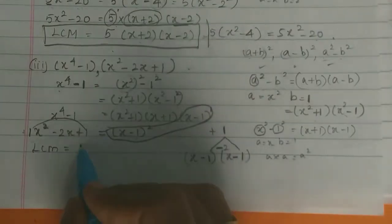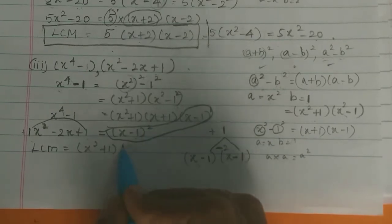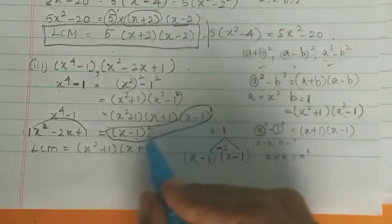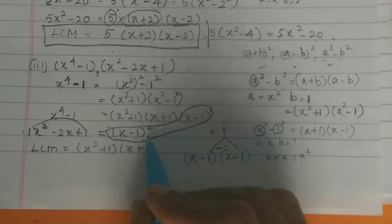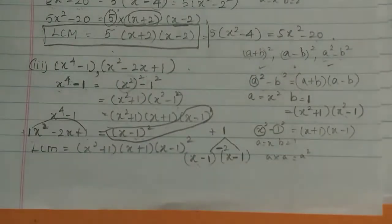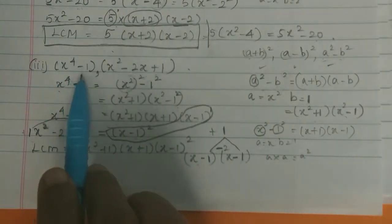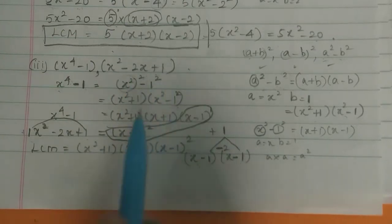So the LCM of x⁴-1 and x²-2x+1 is (x²+1)(x+1)(x-1)² — taking the highest power of each factor across both expressions.